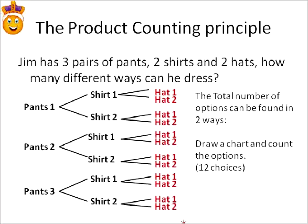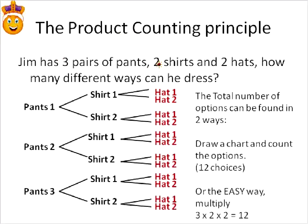The other, easier way — and this is because we notice the word 'product' — we can just take these numbers and multiply them together. Three pairs of pants times two shirts times two hats: three times two is six, times two is 12. That's the easier way to solve a product question.